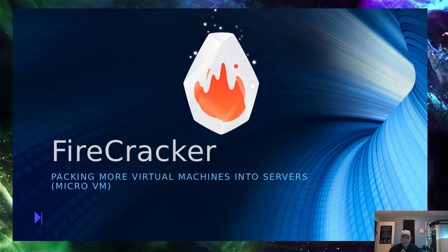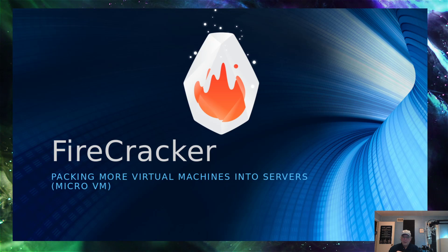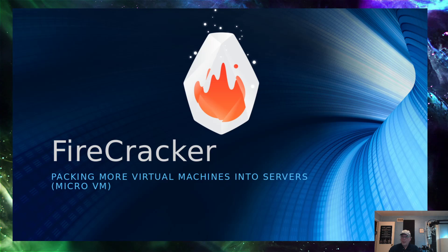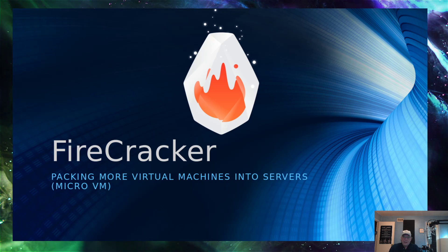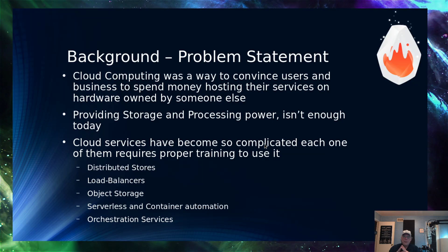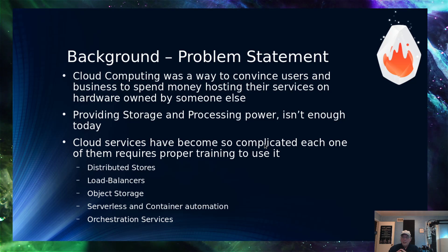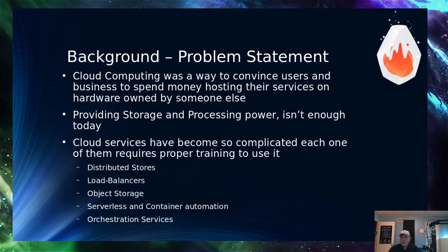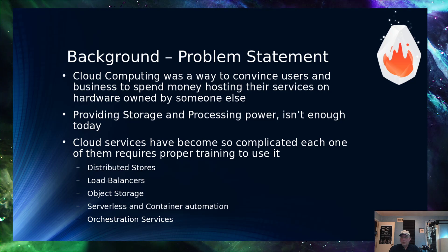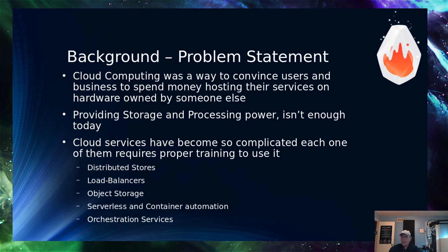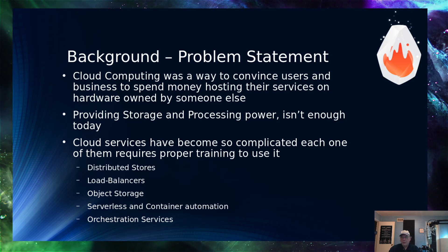I'm going to talk a little bit about Firecracker today, but before we delve into that, as always, whenever there's a solution, you need to understand the problem. It's great that there's this solution out here, but what does it do for us and why do I need something like this? Cloud computing — we all know that's an easy way to get people to use someone else's hardware. You could spend your money building your own infrastructure, or perhaps you can pay for what you use. The argument has always been that when you're self-hosting, you're paying for that hardware whether it's being used or not, whereas in the cloud you're only paying for the amount of processing and storage that you use.